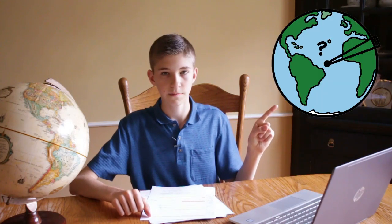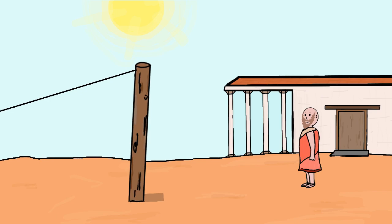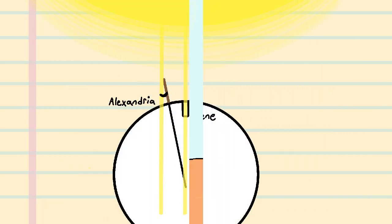Next he needed the inside angle of the arc. Eratosthenes knew that in Cyene, for a few minutes every year, the sun shone directly down a well with no shadows. However, at the same moment shadows would be cast in Alexandria, which is farther north. Eratosthenes erected a pole in Alexandria and at noon on the summer solstice he measured its shadow. He needed this measurement to find the angle between the sun's rays and the vertical pole, which he knew would be equivalent to the inside angle of the arc from Cyene to Alexandria.